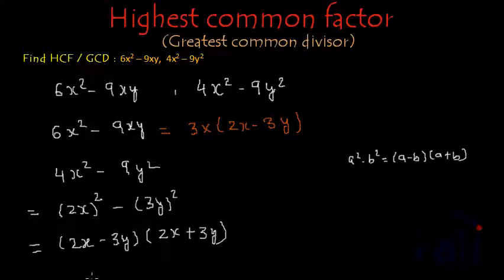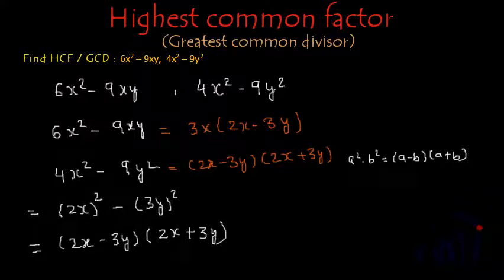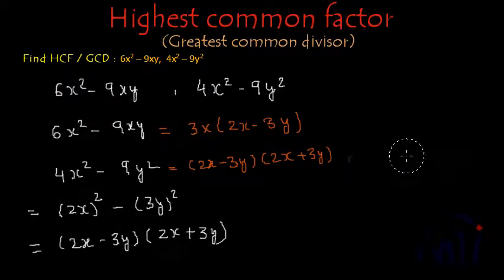So the factors of 4x square minus 9y square are 2x minus 3y and 2x plus 3y. This was the formula. I am just removing this formula and also, I am removing these two steps.